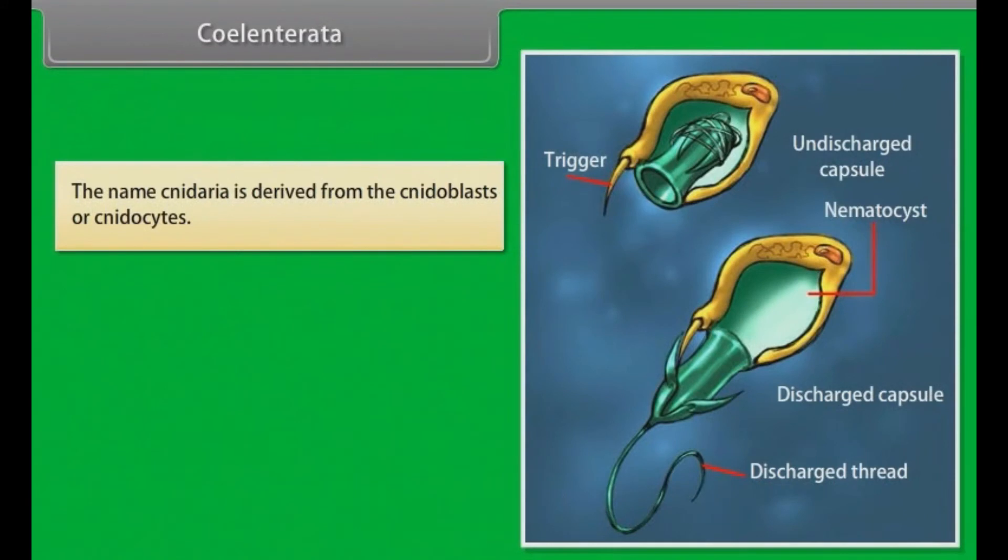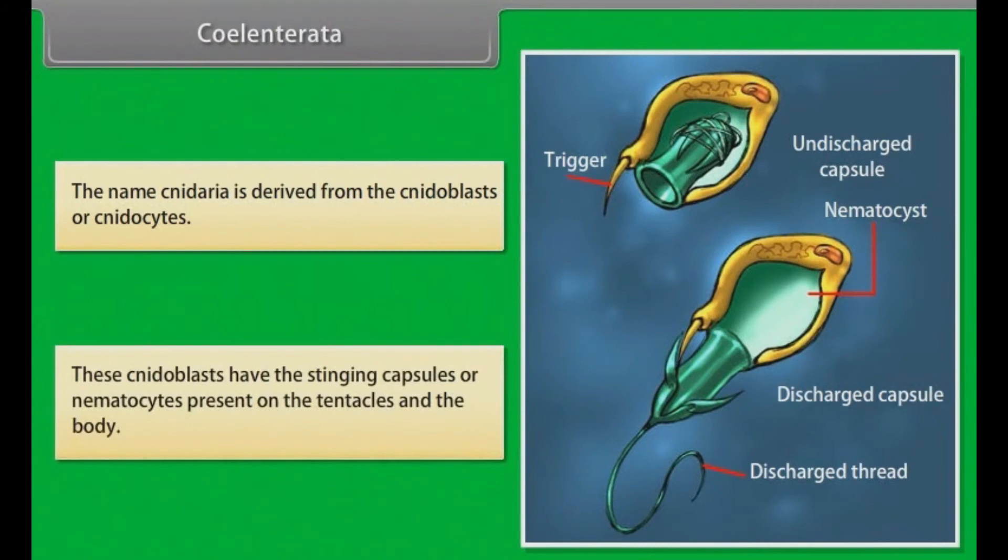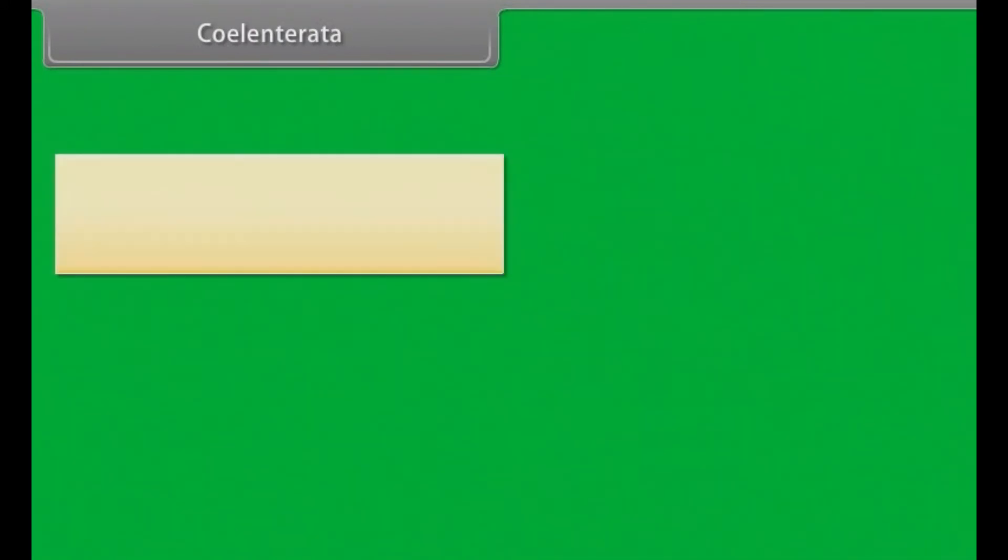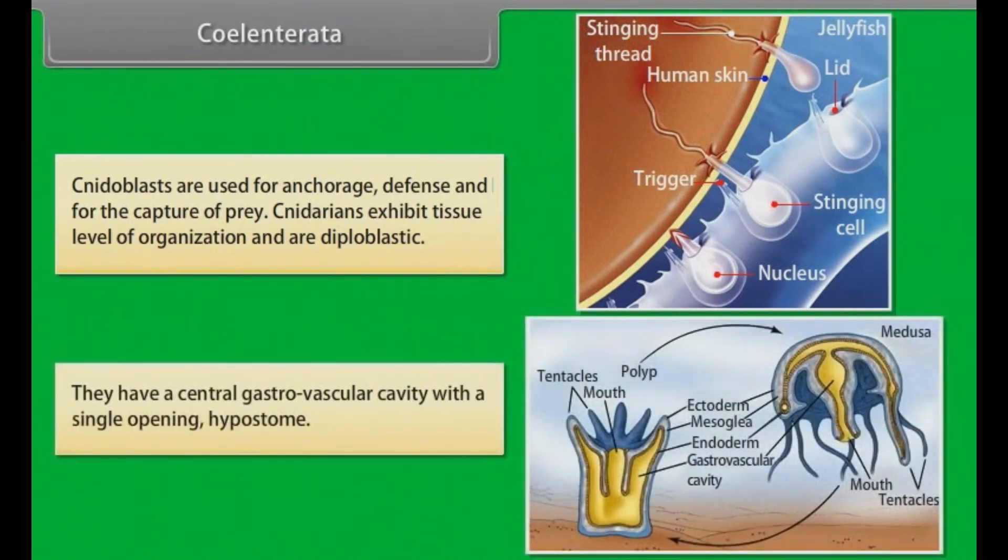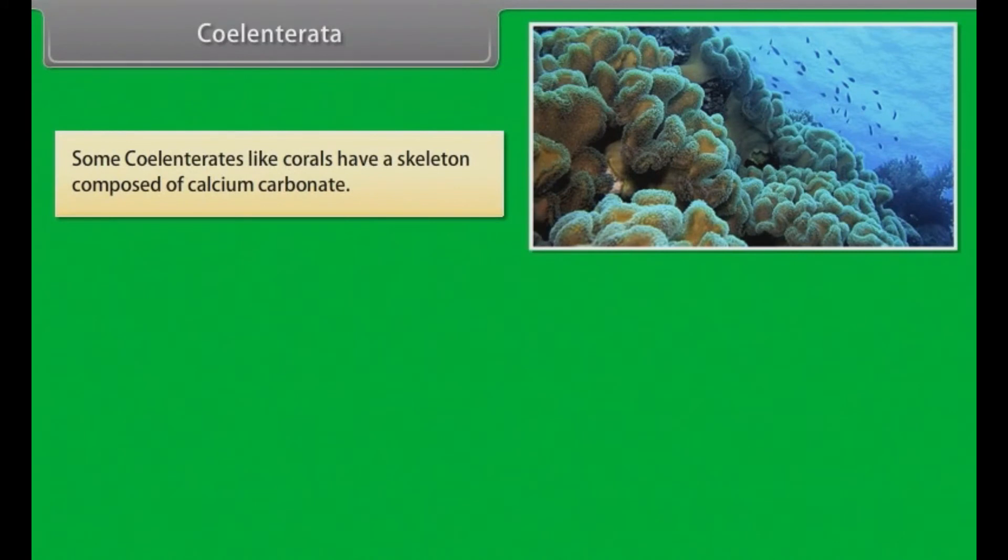Coelenterata. The name Cnideria is derived from the cnidoblasts or cnidocytes. These cnidoblasts have the stinging capsules or nematocysts present on the tentacles and the body. Cnidoblasts are used for anchorage, defense and for capture of prey. Cniderians exhibit tissue level of organization and are diploblastic. They have a central gastrovascular cavity with a single opening, hypostome. Some coelenterates, like corals, have a skeleton composed of calcium carbonate.